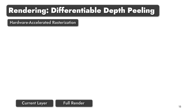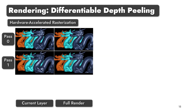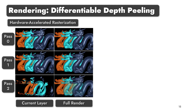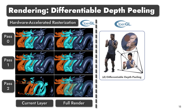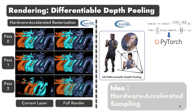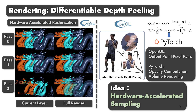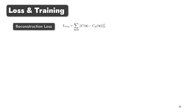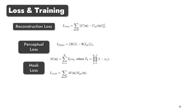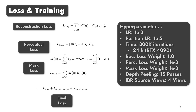The volume rendering equation requires the color and transparency values to be integrated in order. Thus, we utilize the depth peeling algorithm for acquiring the corresponding ordered points for pixels. Thanks to the point cloud representation, we can leverage the hardware rasterizer to significantly speed up the depth peeling and blending process. Moreover, it is easy to make this rendering process differentiable, enabling us to learn our model from input RGB videos. Given the rendered pixel color, we compare it with the ground truth pixel color to optimize our model in an end-to-end fashion using these loss functions.